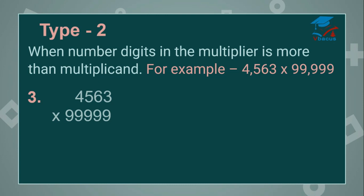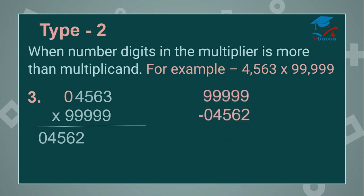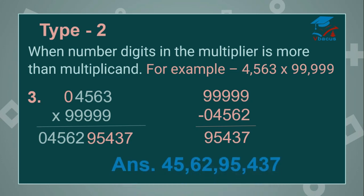You can make 5 digits in the multiplicand by inserting a 0. Write the first part — what is the predecessor of 4,563? That will be 4,562. Now subtract 4,562 from 99999, and your answer will become 95437. This number you can write in the second part, so your answer will become 4,56,295437. This was Type 2.